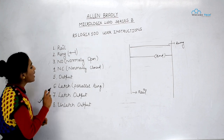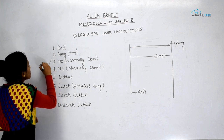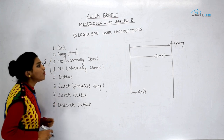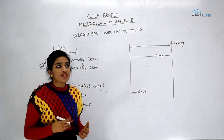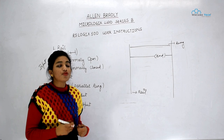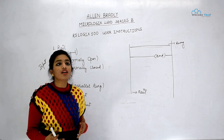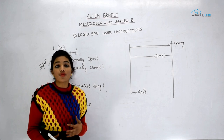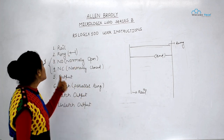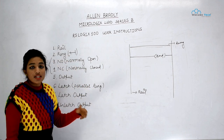Next we have NO and NC. These two are input instructions. The types of inputs we can have are sensors — like fluid sensors, temperature sensors — and anything by which we want to give input to our PLC will come under input instructions, that is NO and NC.